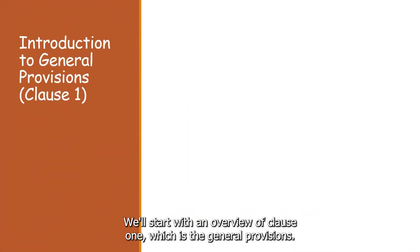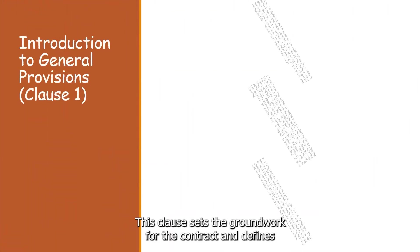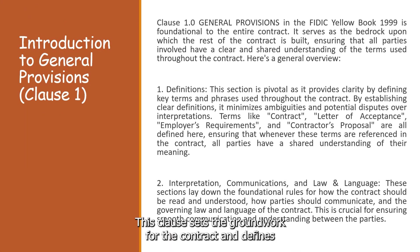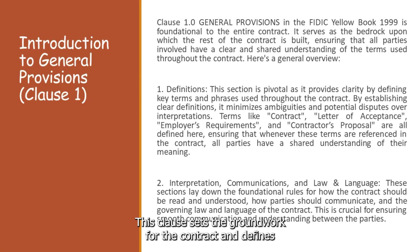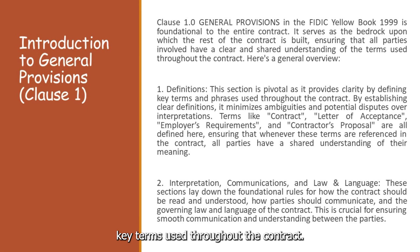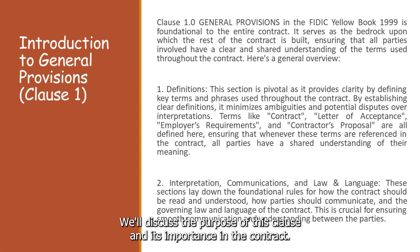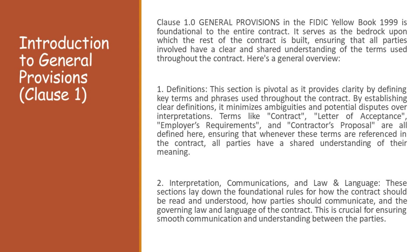We'll start with an overview of Clause 1, which is the general provisions. This clause sets the groundwork for the contract and defines key terms used throughout the contract. We'll discuss the purpose of this clause and its importance in the contract.